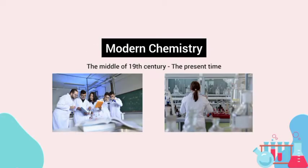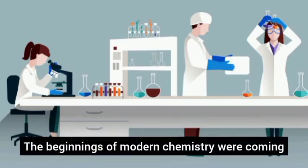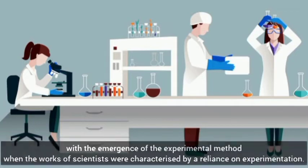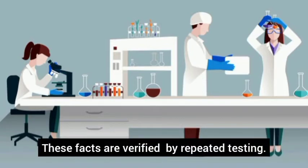Modern chemistry is different from the middle of 19th century to the present time. The beginning of modern chemistry was coming with the emergence of the experimental method when the words of scientists were characterized by a reliance on experimentation. Scientific facts remain the same, no matter who does the measuring. These facts are verified by repeated testing.